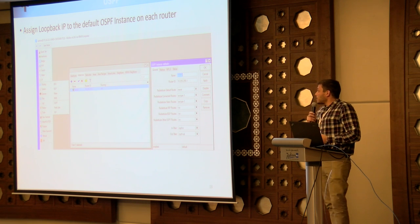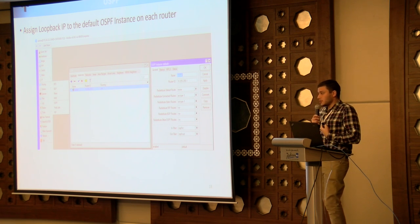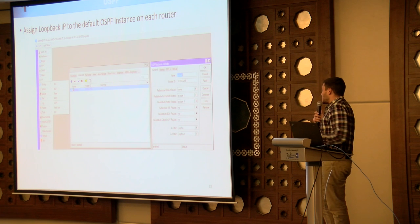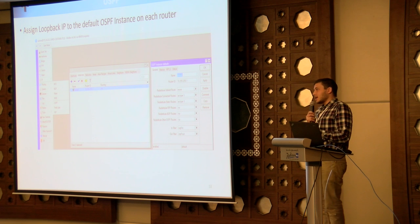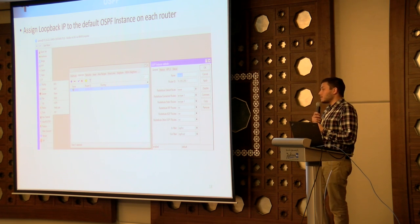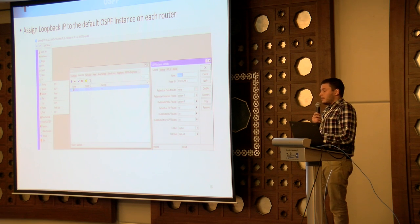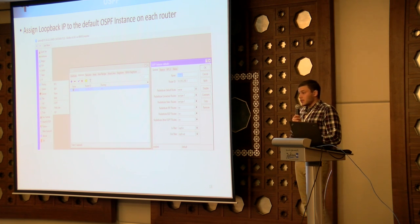For OSPF, we assign the loopback IP address to the router ID of the default OSPF instance on each router. If you're using any other instance, it's recommended to do the same. This is important because if you assign the loopback IP — which is never going to be down — as the router ID, that router ID will never change, avoiding wasted time when OSPF recalculates the best path after a router ID change. In this case we redistribute connected and static routes.